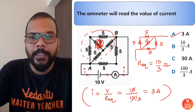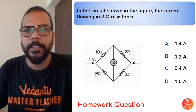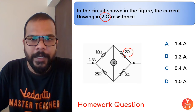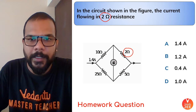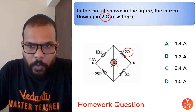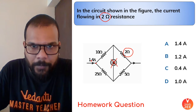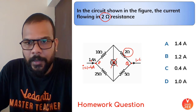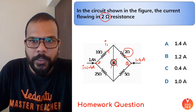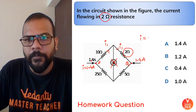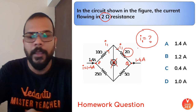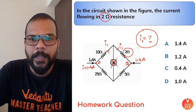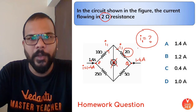Here's your homework question: in the circuit shown, find the current flowing through the 2 ohm resistance. Note that 10/25 = 2/5, so it's a balanced Wheatstone bridge — no current flows through the 2 ohm branch. With 1.4 amperes arriving at junction P and leaving at junction Q, find the current i1 going through the upper branch. Solve and share your answer in the comment section.